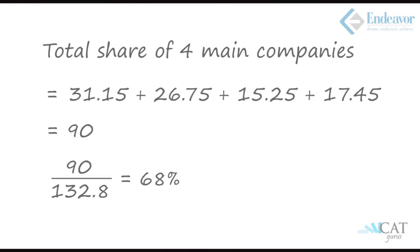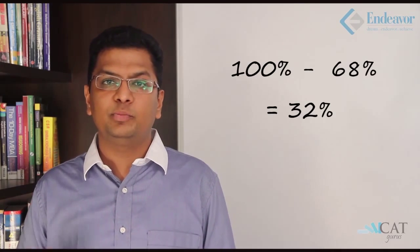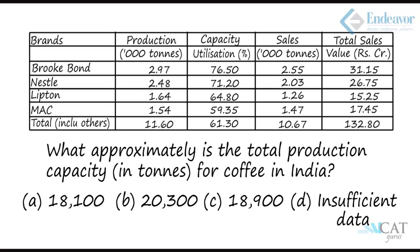Question 3: What percentage of the total market share by sales value is controlled by 'others'? We total the sales value for the four companies: 31.15 + 26.75 + 15.25 + 17.45 = 90.60, out of a total of 132.8, which is approximately 68%. So 'others' control 100 minus 68, which is 32%. Option B is correct.